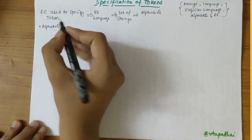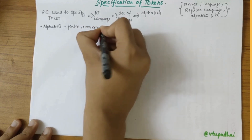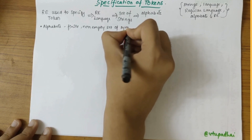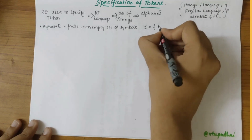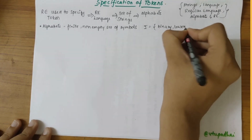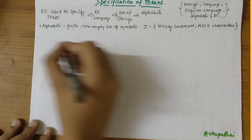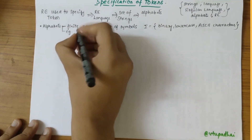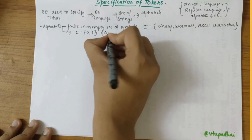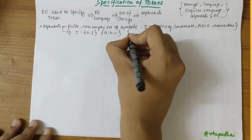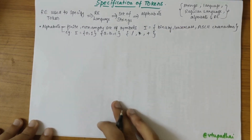Firstly, let's look at alphabets. Alphabets are a finite, non-empty set of symbols, defined using Sigma. Alphabets could be either binary, lowercase letters, or ASCII characters. For example, Sigma equal to {0, 1} is binary alphabets; Sigma equal to {a, b, c} are lowercase letters; Sigma equal to {slash, star, plus} are ASCII characters.